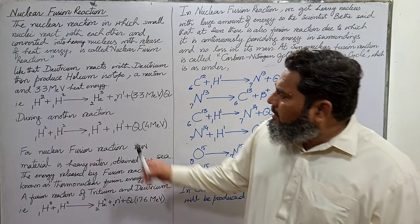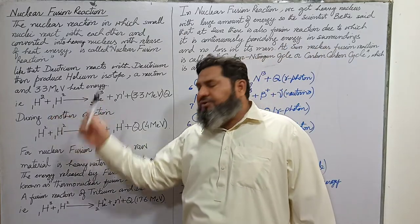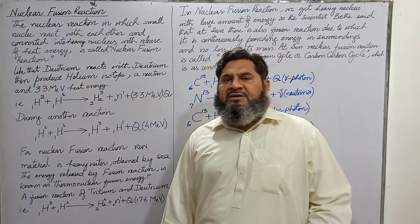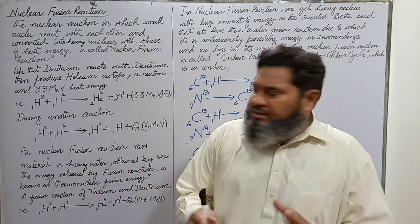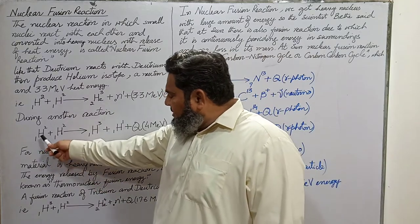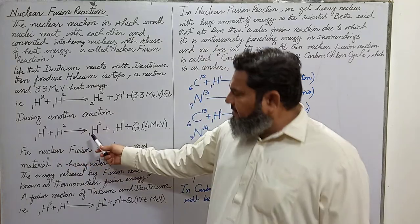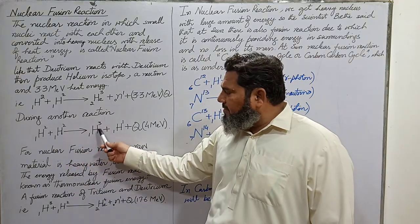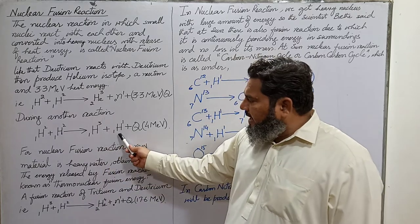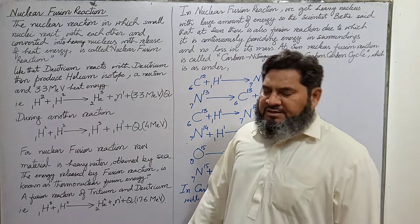During another reaction of deuterium with deuterium under different temperature conditions, ¹H² + ¹H² react and produce tritium ¹H³ plus ordinary hydrogen ¹H¹ and 4 mega electron volts of heat energy.